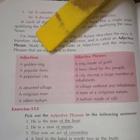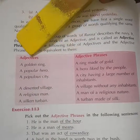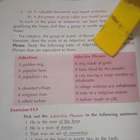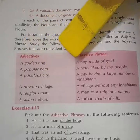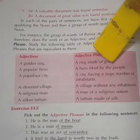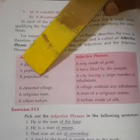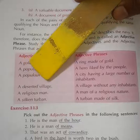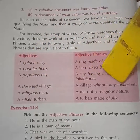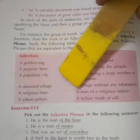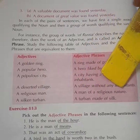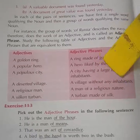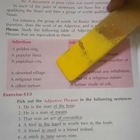Let us study more about the adjective phrase. A golden ring — a ring made of gold. A popular hero — a hero liked by the people. A popular city — a city having a large number of inhabitants. A deserted village — a village without any inhabitants. A religious man — a man of a religious nature. A silken turban — a turban made of silk. These are all adjective phrases, and these on the left are all adjectives.